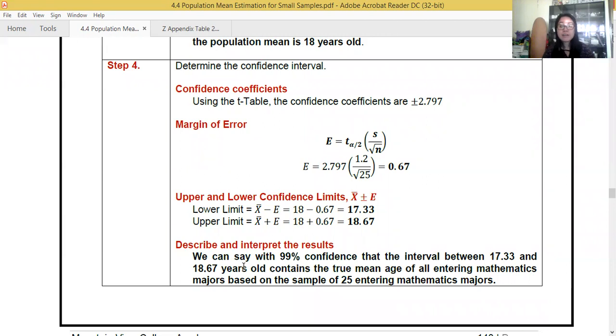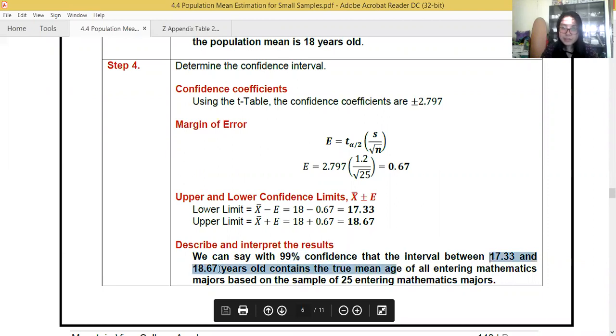Should I always say it that way? Actually, you could paraphrase. You can say, we are 99% confident that the true mean age of all entering mathematics majors ranges from 17.33 to 18.67 years old, based on a sample of 25 entering math majors. What's important is you have your confidence level in the results, you have the range, you have the parameter of interest, and you have your sample size. If we check confidence level, the interval estimate, this is the parameter of interest, and this is the sample size.